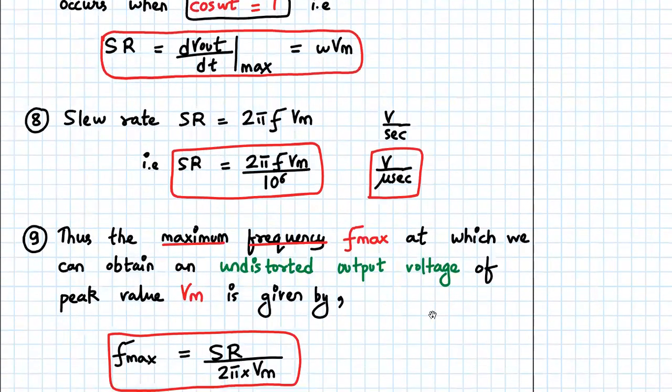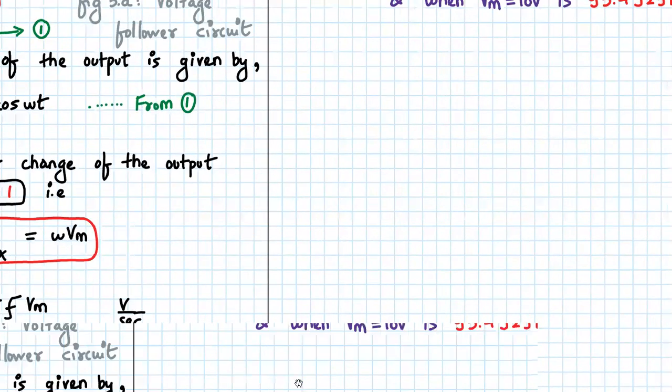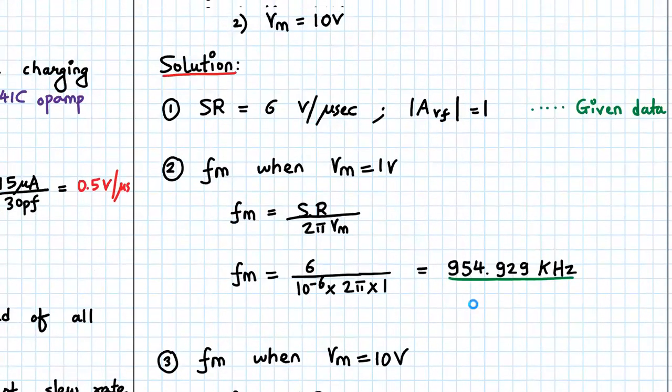So please keep this in mind. Now a very important next point which we have to consider is as follows. The maximum frequency f max at which we can obtain an undistorted output voltage of a peak value Vm is given by. So from this rearrange the formula. So f max will be slew rate divided by 2 pi into Vm. We will use this concept in some numericals.